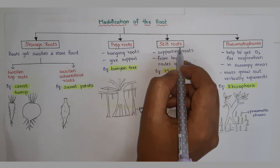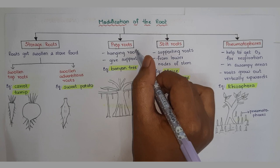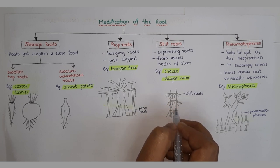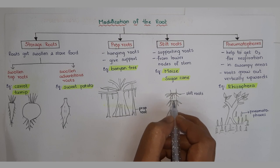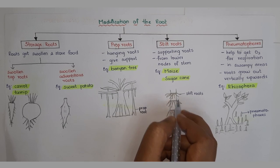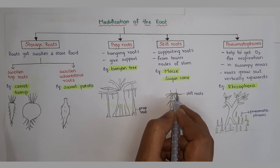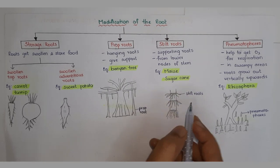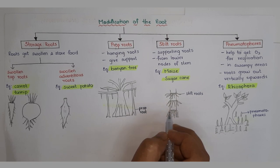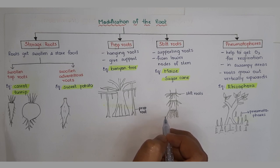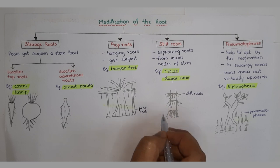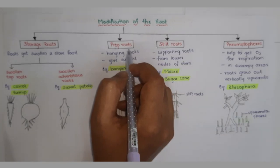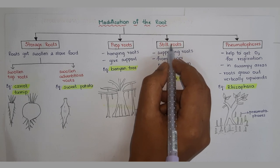Next are stilt roots, which are also supporting roots. There are two types of supporting roots: prop roots and stilt roots. Stilt roots are the roots which come from the lower nodes of the stem. The node is the part where leaves emerge, and the internode is the part between two nodes. These stilt roots grow downwards, reach the ground, grow into the soil, and support the stem. Examples of stilt roots are maize and sugarcane.